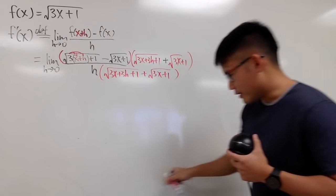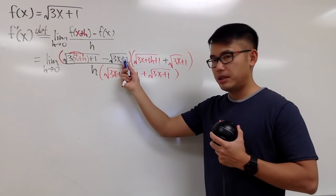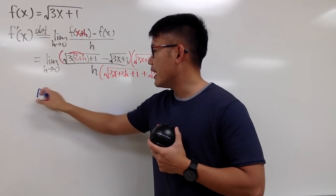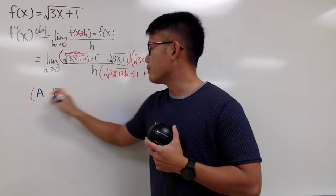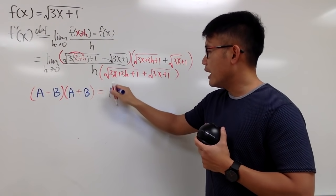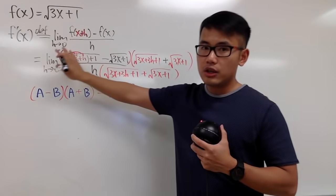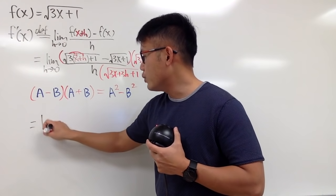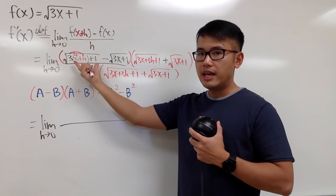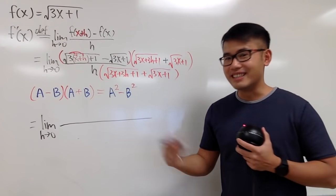We just have to do some algebra from here. The beauty of using the conjugate is that this is in the form of (a minus b) times (a plus b). There's a nice formula: (a minus b)(a plus b) equals a squared minus b squared. Let me focus on the top: the limit as h goes to 0. This is the 'a', squared — and when you square a square root, they cancel out. You just have the inside: 3x plus 3h plus 1.